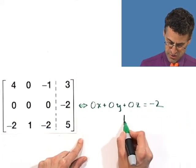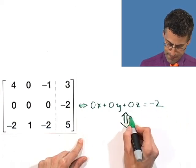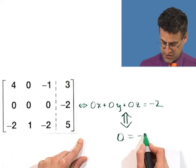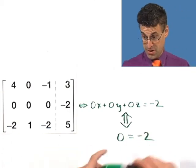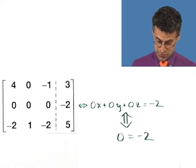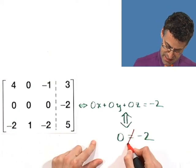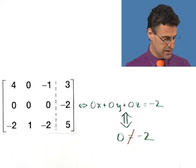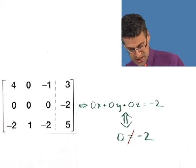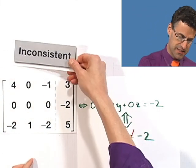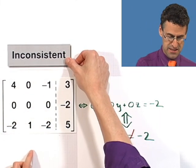Which if you simplify that, tells me that 0 equals negative 2. Well, that, as you know, is not true. I looked it up in the math handbook last night and it turns out that's false. Which means that, in fact, this is an example of what's called an inconsistent system.